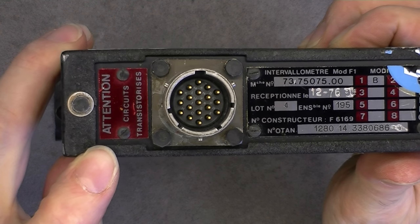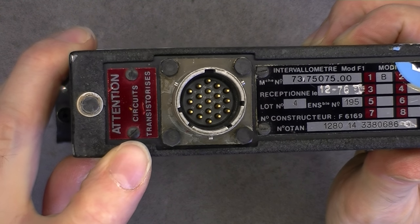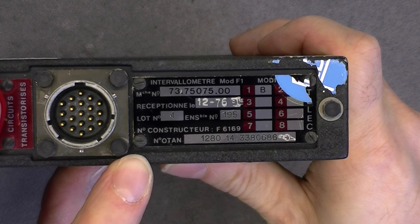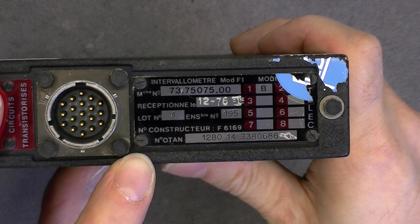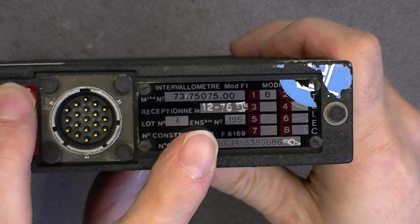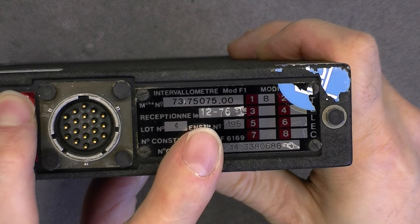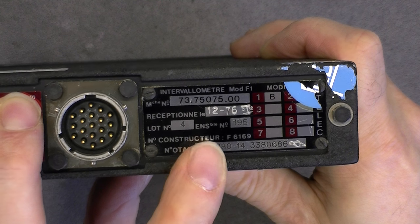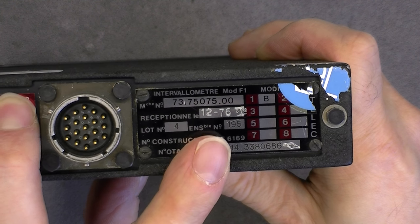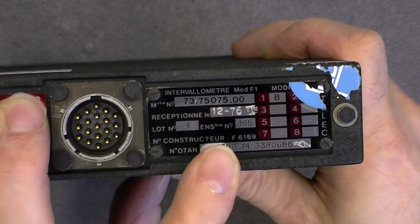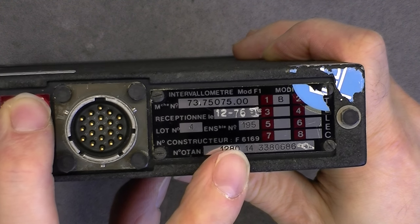On the back we have a label with caution transistorized circuits. Manufacturer tour date of December 1976, serial number 195. And we have a NATO number here and the manufacturer number also.